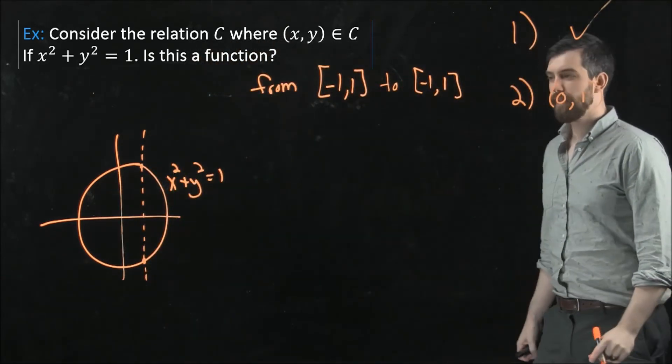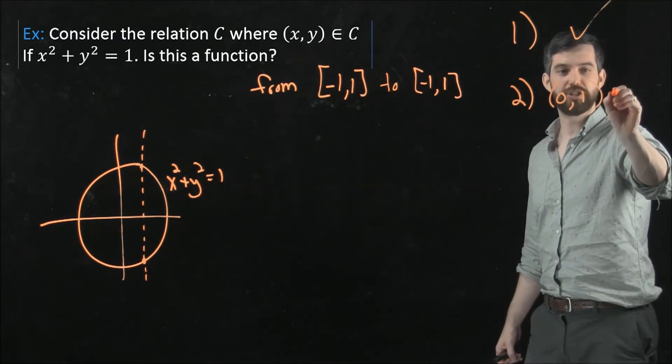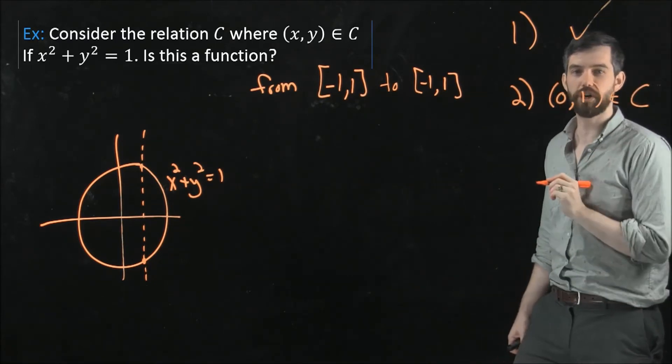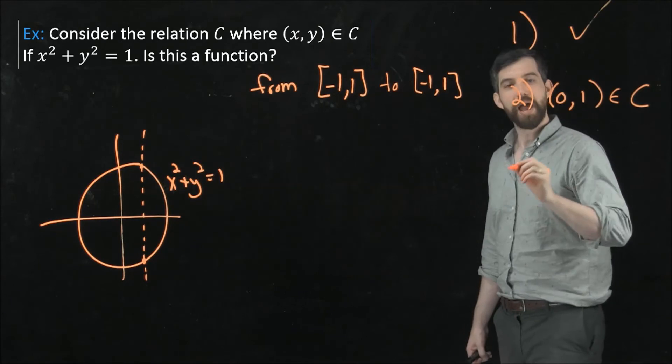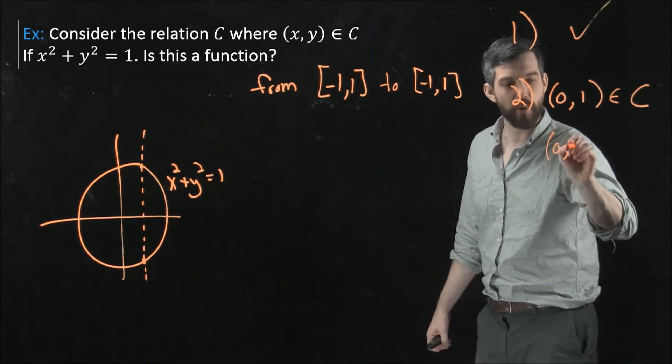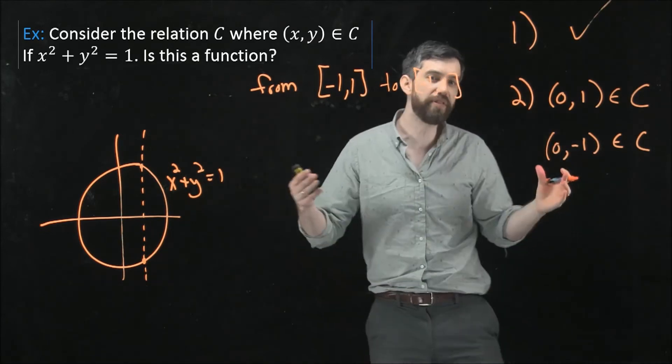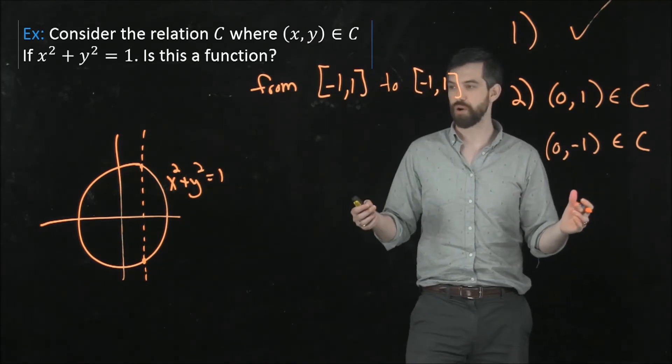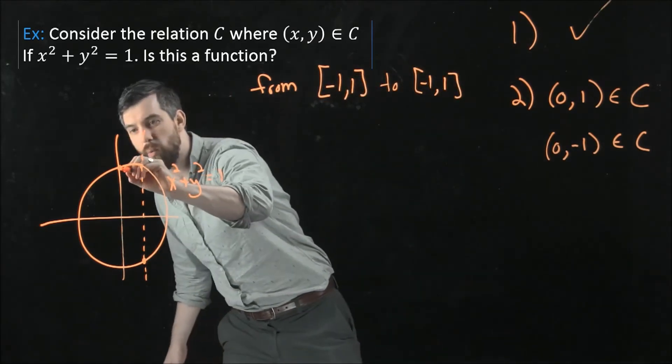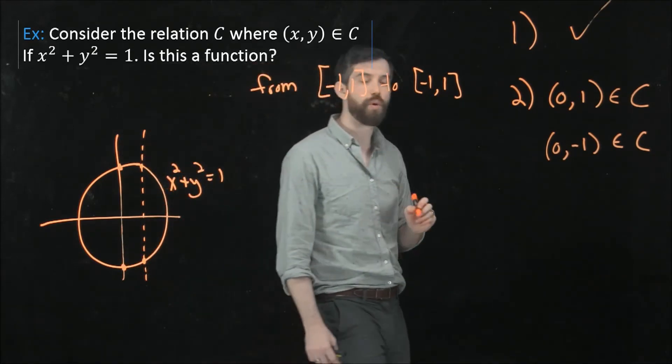Well, this is inside of my relations. This is inside of my circle for sure. But I also have that 0 minus 1 is inside of my circle. Both of these things are going to be true. So there's my 0, 1, and there's my 0 minus 1.